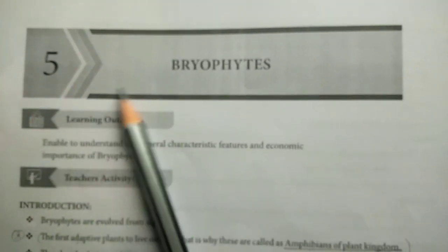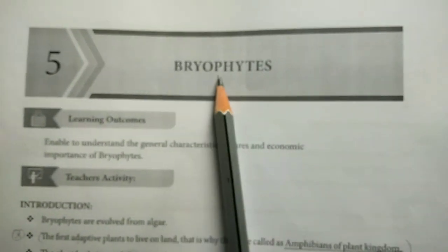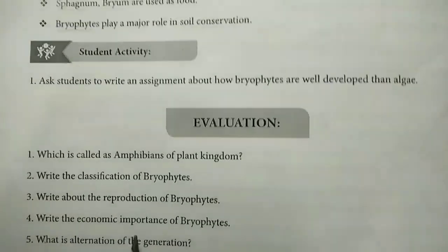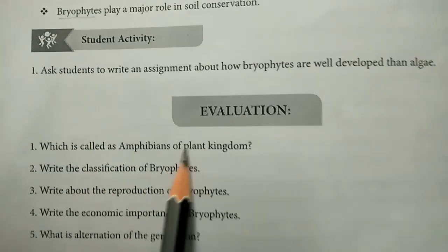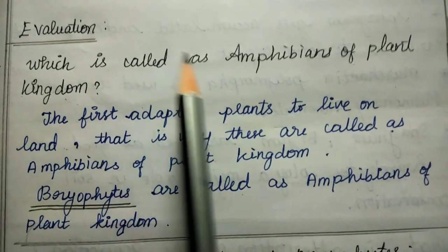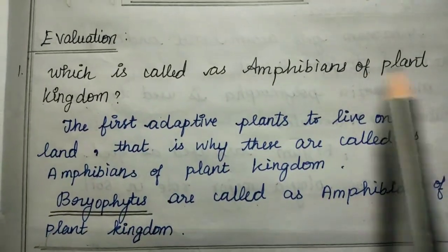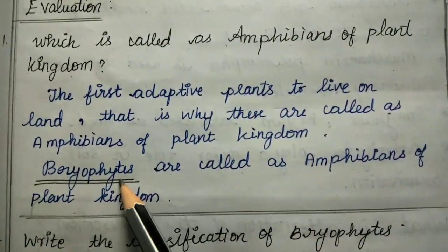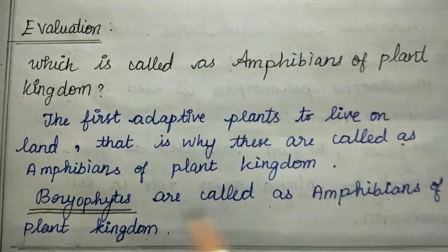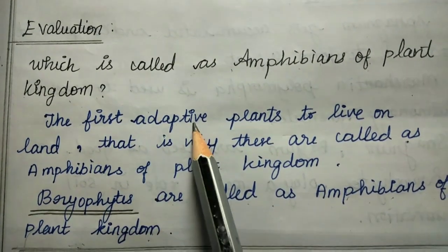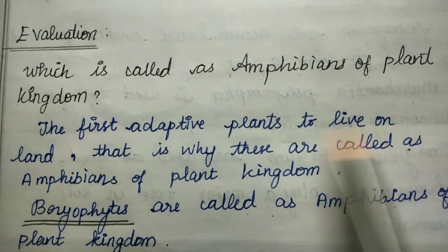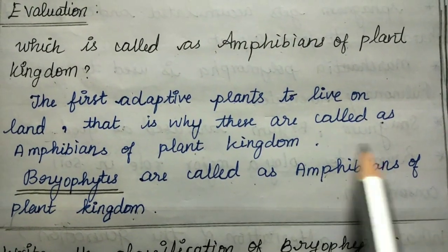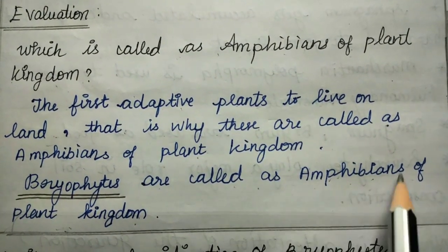Next is the fifth lesson: Bryophytes. Bryophytes are called the amphibians of the plant kingdom because they were the first to adapt to live on land, yet still depend on water. That is why they are called amphibians of the plant kingdom.